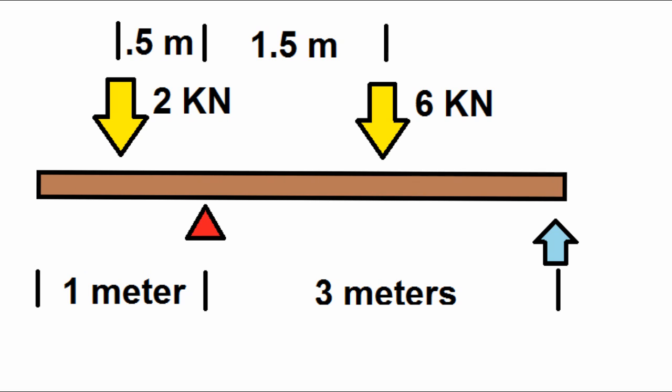It's also good to note that the force happens halfway between the distributed load, so the two kilonewtons is 0.5 meters away from the triangle, and the six kilonewtons is 1.5 meters away from the triangle.